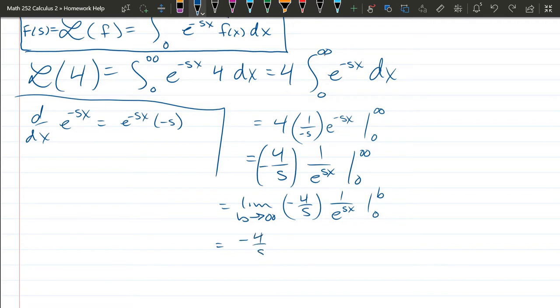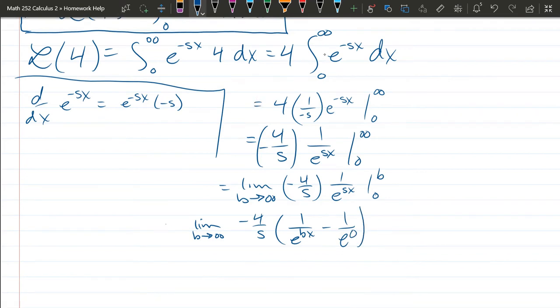Now, my s looks like a 5, so be careful, it's an s. If I write my 5, I make sure it has some sharp pointers, so my 5 looks a bit different, but my s might look just like your 5. So we're going to plug in the b and the 0. Limit b approaches infinity, 1 over e to the bx minus 1 over e to the 0 times s, which will be e to the 0. So e to the 0 is 1, so that's going to be a minus 1.